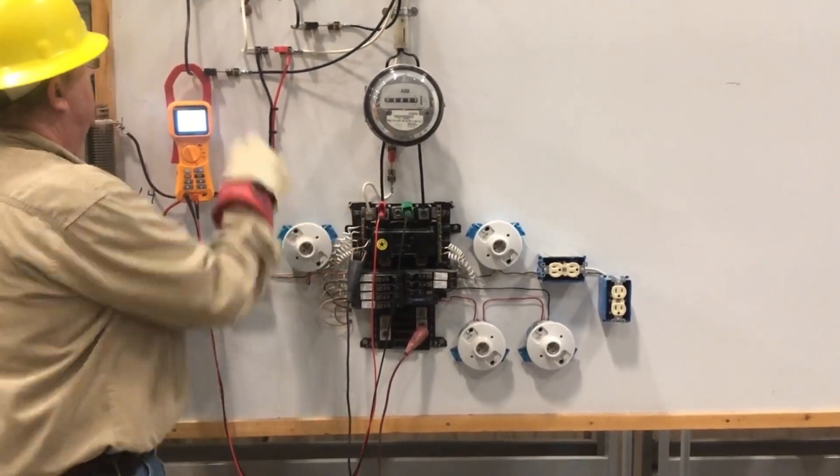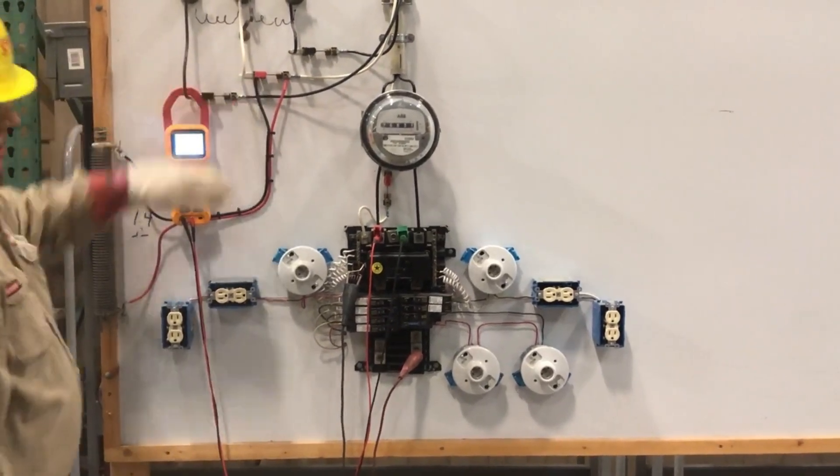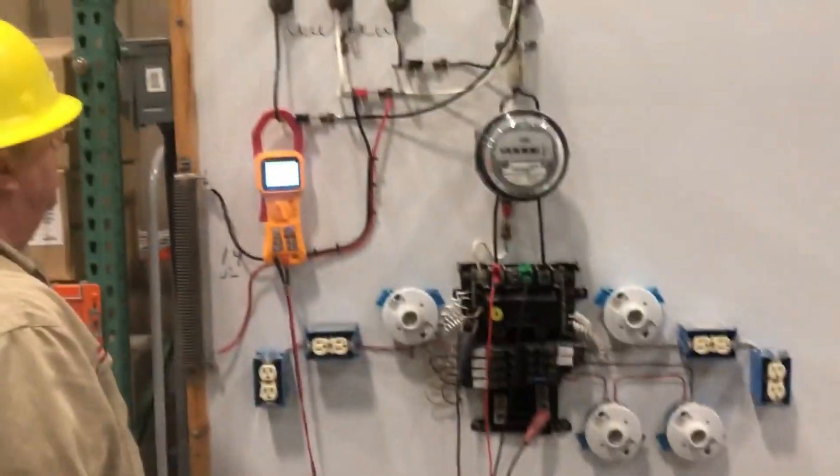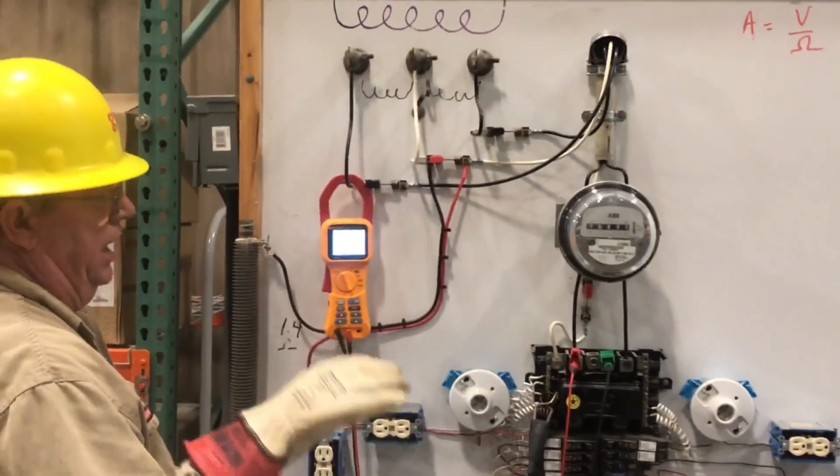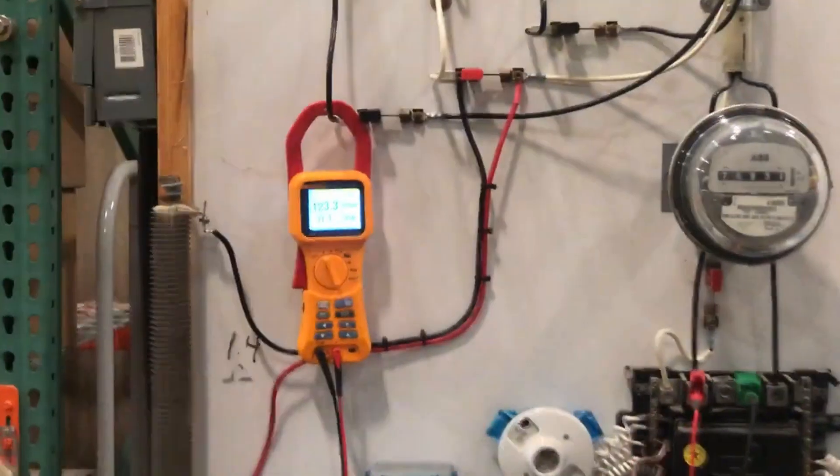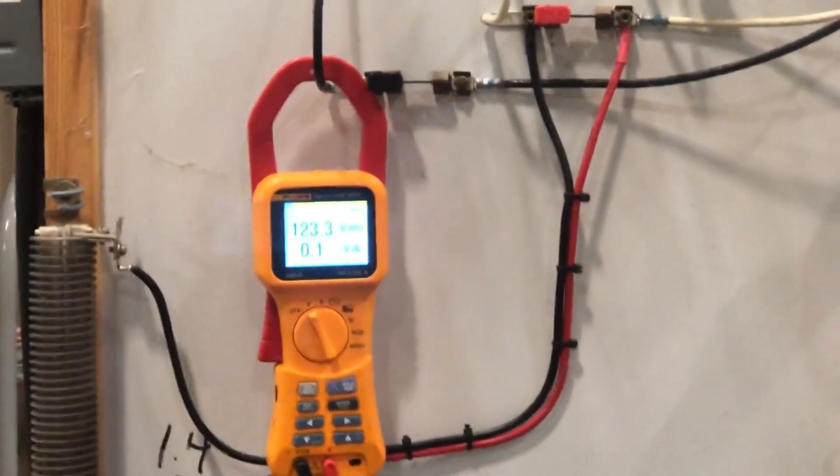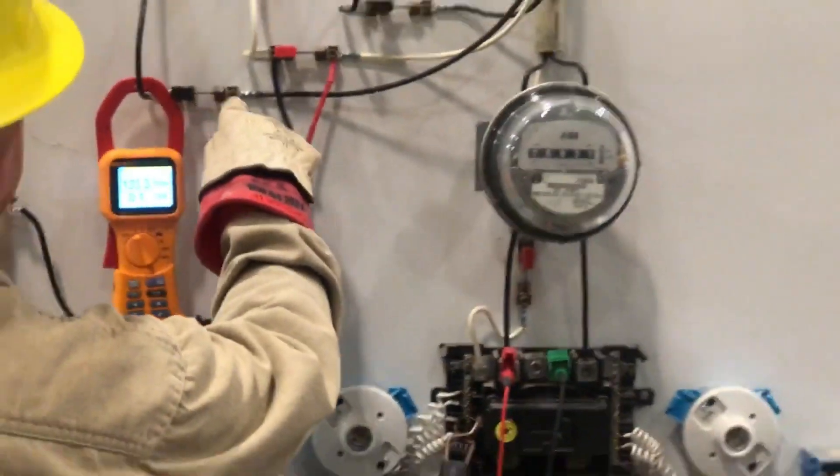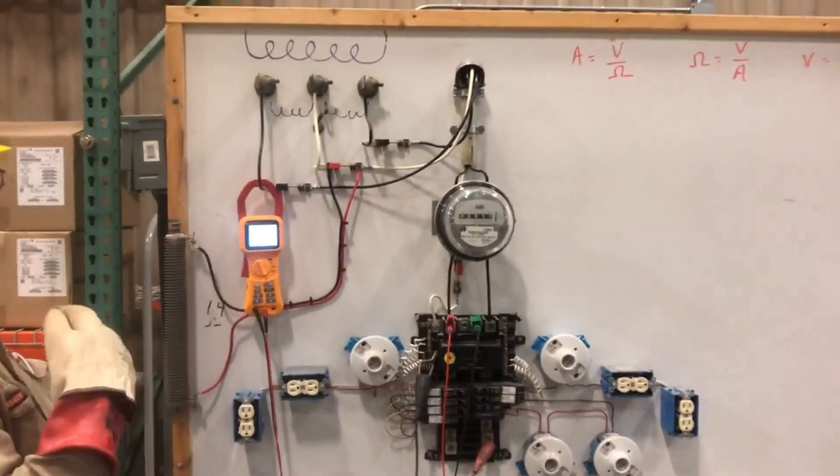Now I'm going to bring on load with the neutral closed. The neutral is in good condition. 121.6, 122.7. And you're watching the loaded leg or the unloaded leg. 123.3. Neutral is in good condition. We added 24 amps and we watched the unloaded leg go to 123.3.